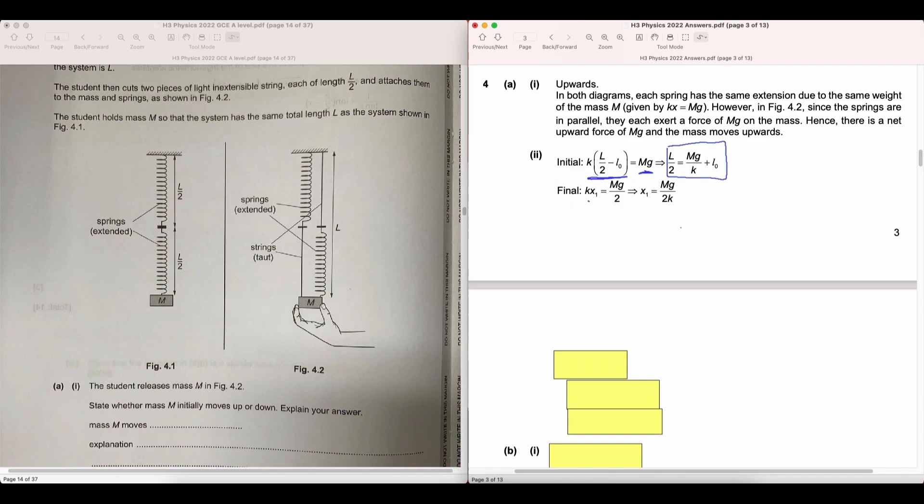Now in the final scenario, x1 is defined to be the extension that the spring has from the original position. That also means that x1 equals the final length minus the length of the string, L over 2, minus L0, the equilibrium length of the spring. Putting it all together, we obtain the following expression for L1.